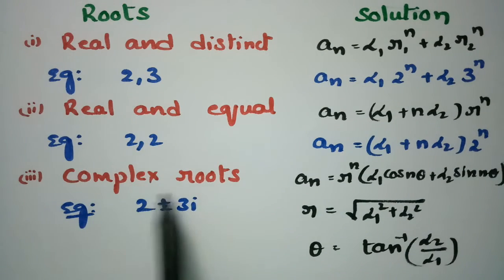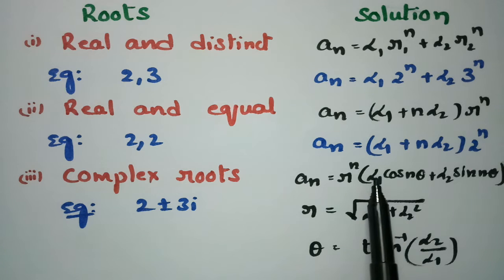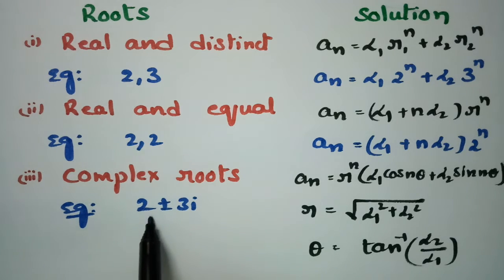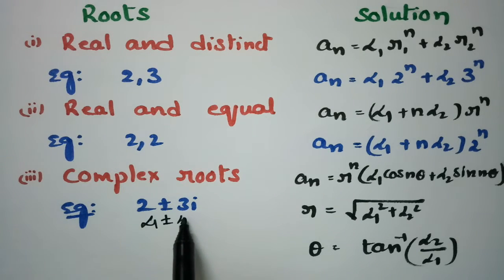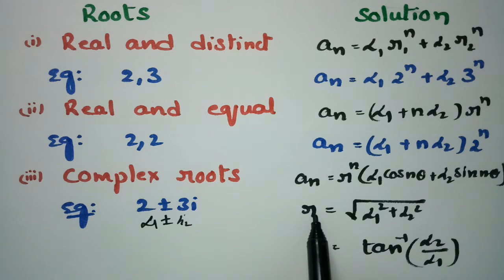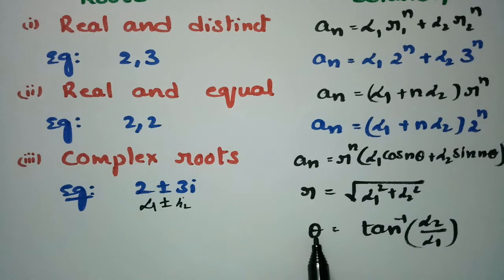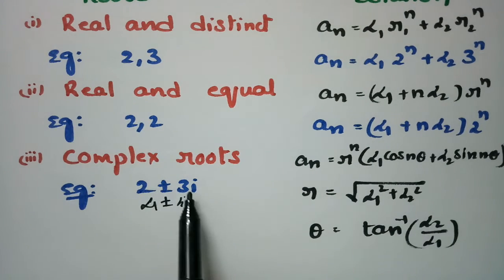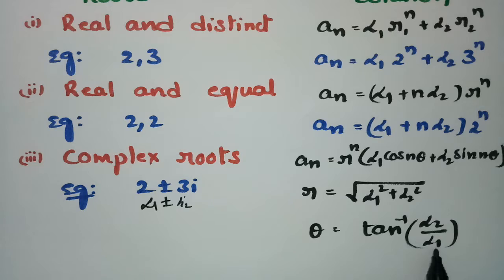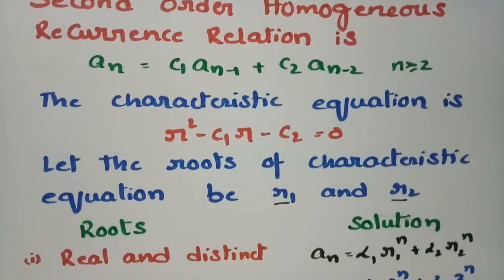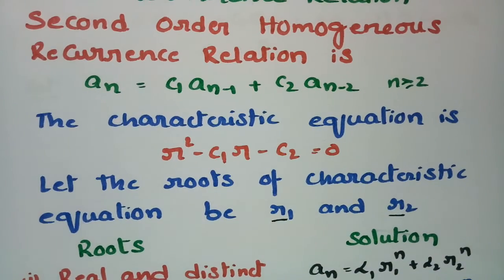Case 3: If the roots are complex, the solution is An = R^n · (α1·cos(nθ) + α2·sin(nθ)). For example, if the complex roots are framed as α1 + α2·i, the R value is √(α1² + α2²) — that is, √(2² + 3²) — and θ = tan⁻¹(α2/α1), which is tan⁻¹(3/2). These are all the types of roots and solutions for the second order homogeneous recurrence relation.